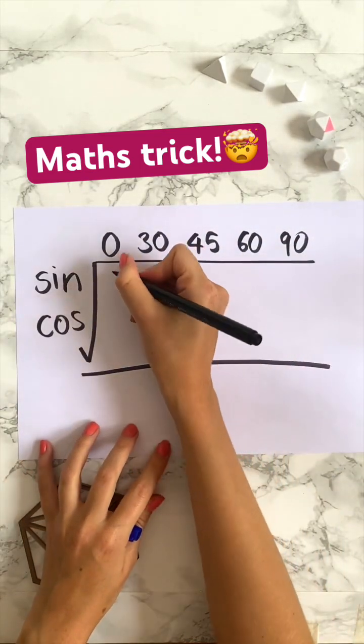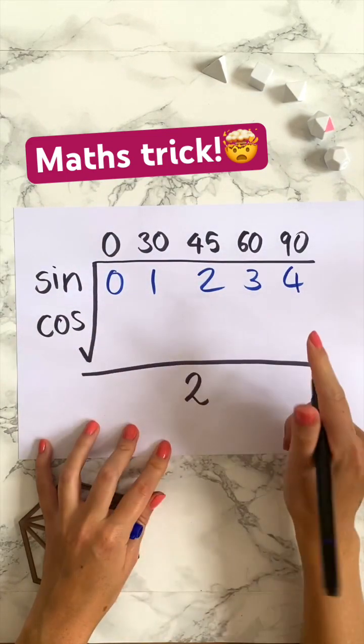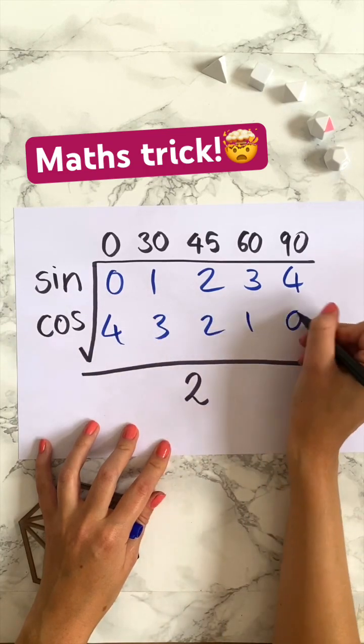Then inside the grid you're going to write on the top row 0, 1, 2, 3, 4 and then on the bottom you're going to do the reverse 4, 3, 2, 1, 0.